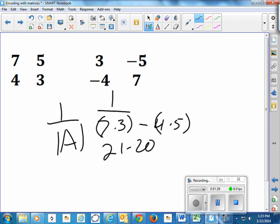So they've chosen this one so that it comes out nice and neat. 21 minus 20 is 1, so I just have 1 over 1. And then I just trade places with the 7 and 3, and make the 4 and the 5 negative.